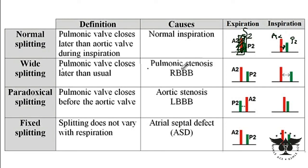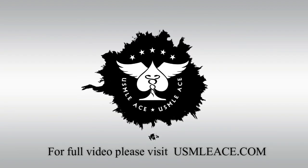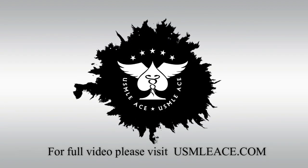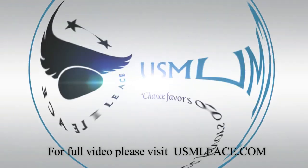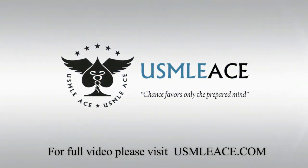With pulmonary stenosis, it takes longer for the pulmonary valve to close because there is too much pressure behind the valve, so the distance between A2 and P2 increases — particularly during inspiration. Compared to the normal heart, you can see a wide distance between A2 and P2, and this is referred to as wide splitting.